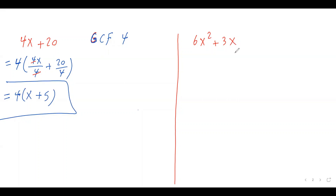I have 6x squared plus 3x. Again, the first thing we need to do is find the greatest common factor. The first term has a number and a variable; the second term has a number and a variable as well. Focus on the numbers first: the greatest common factor between 6 and 3 is 3. Then move on to the variables: I have x squared and x. Whenever we have variables, always choose the variable with the lowest exponent as the greatest common factor. So I choose x. My common factor here is 3x.